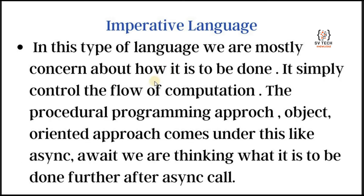Imperative language — JavaScript is an imperative language. In this type of language, we are mostly concerned about how it is to be done. It simply controls the flow of computation. The procedural programming approach and object-oriented approach come under this, like asynchronous calls — thinking about what is to be done after a synchronized call.